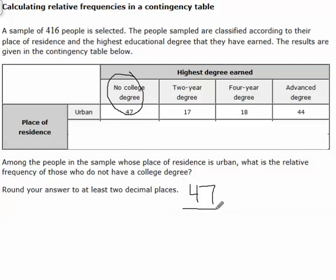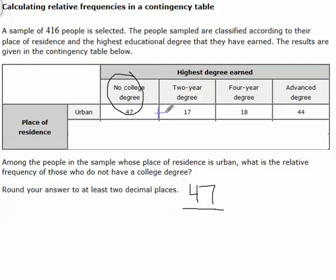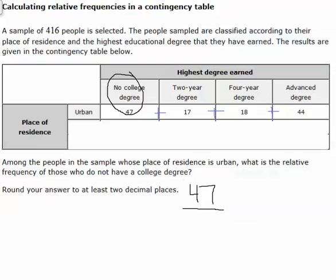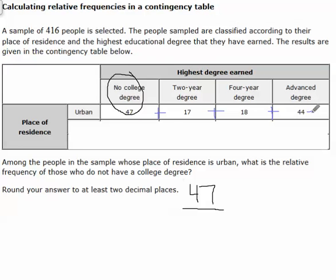We need to know how many total people we're looking at. To figure out our total, we're going to add all of the urban group together: 47 plus 17 plus 18 plus 44, and that gives us 126. So we have a total of 126 people — that's our denominator.